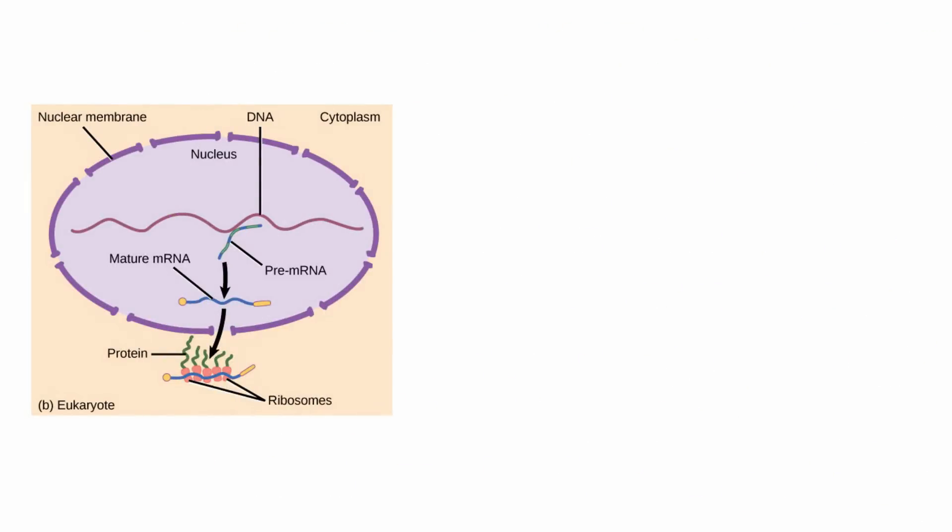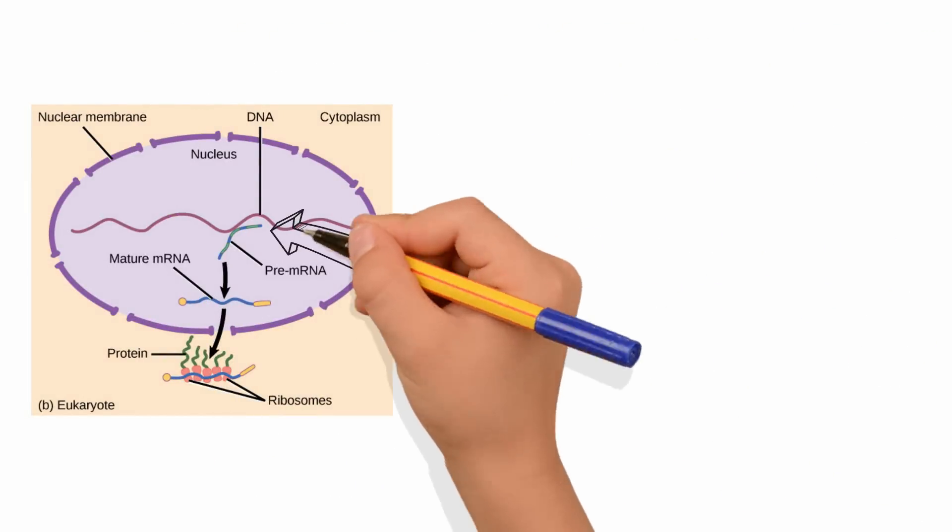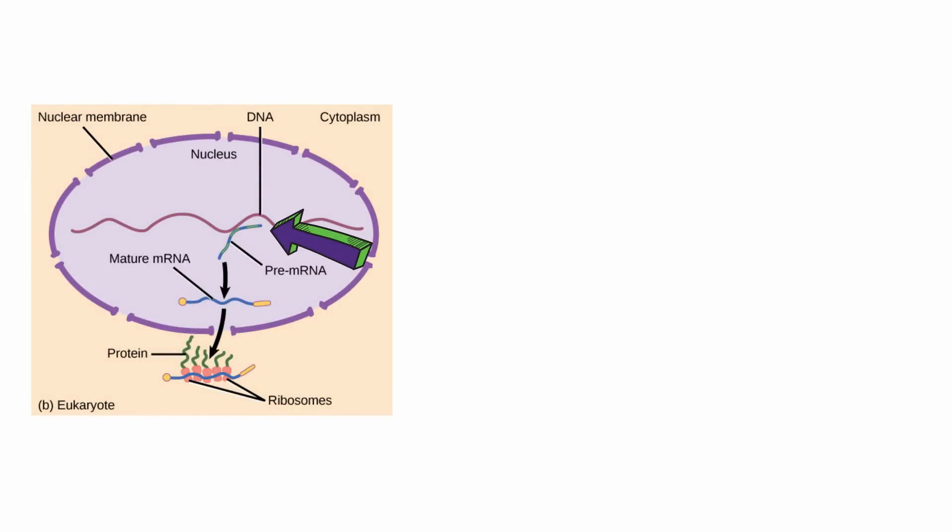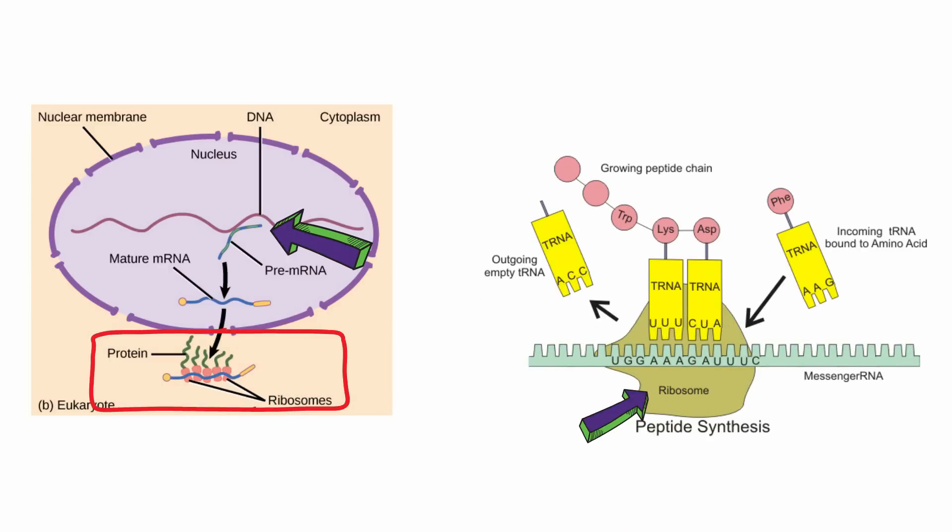To bring it all together, sections of DNA are transcribed into mRNA, which is brought from the nucleus to the ribosome, composed of rRNA and protein. The mRNA is then read by the ribosome, which brings the tRNA in with the appropriate amino acids to build whatever protein the mRNA is a template for.